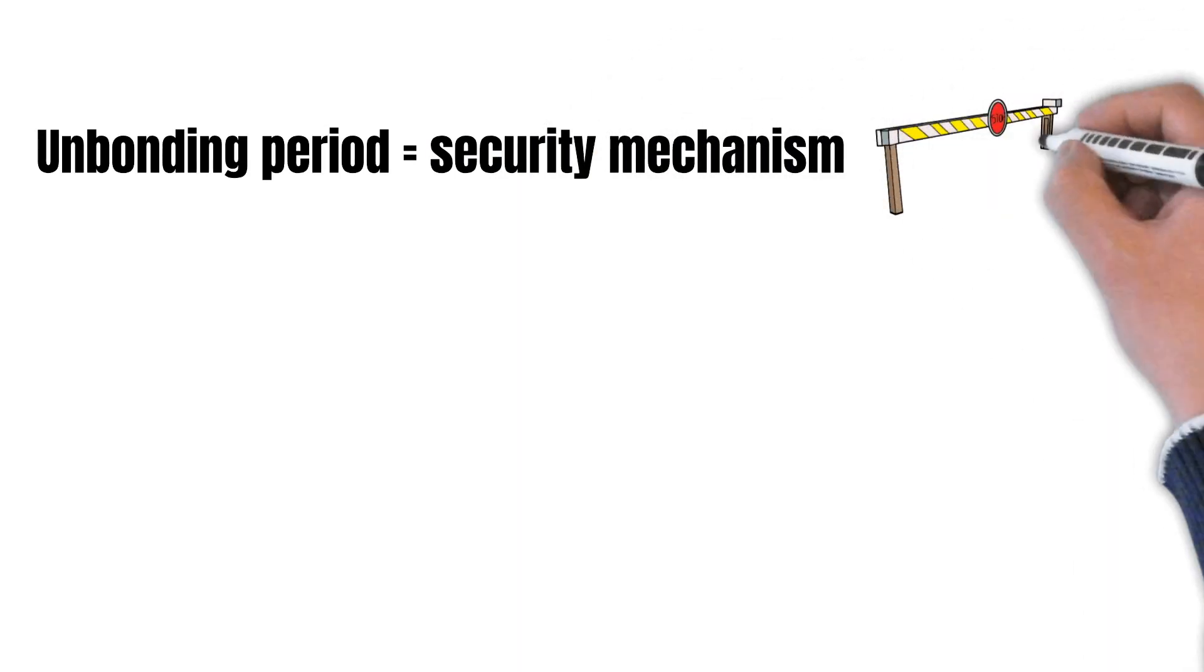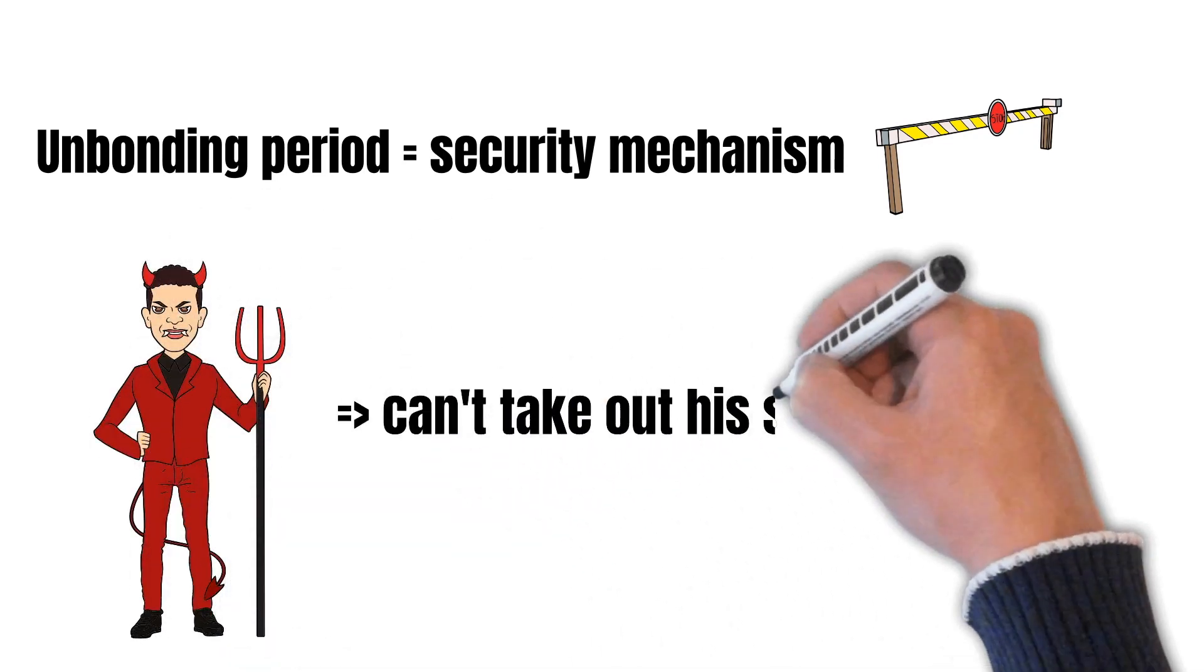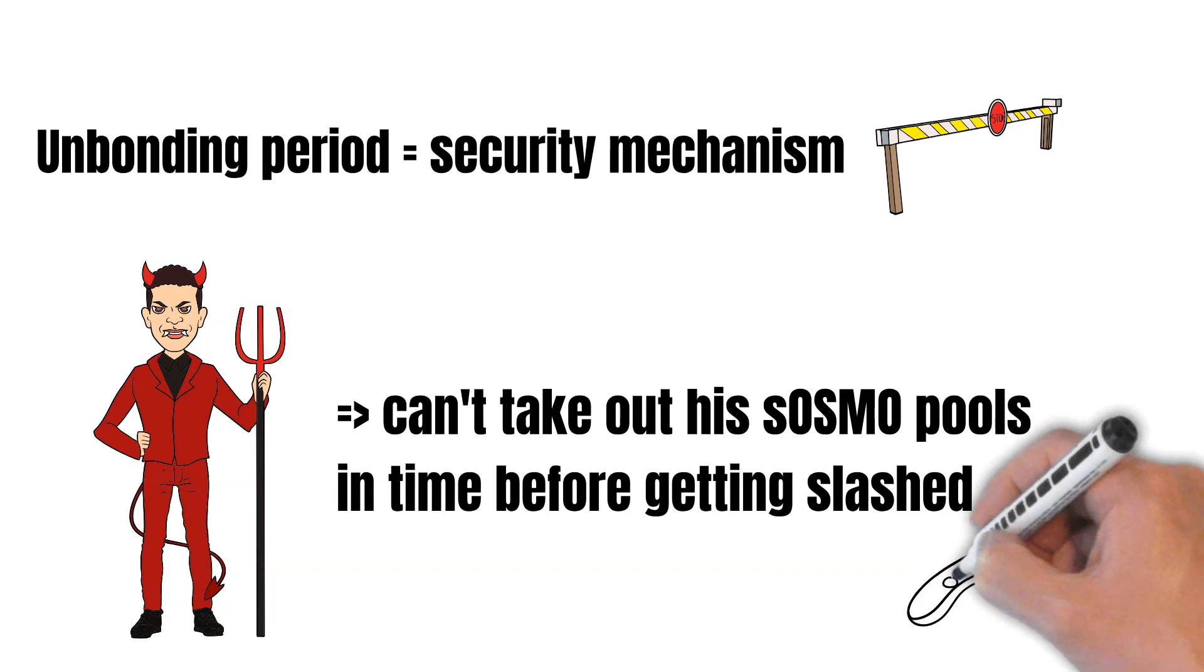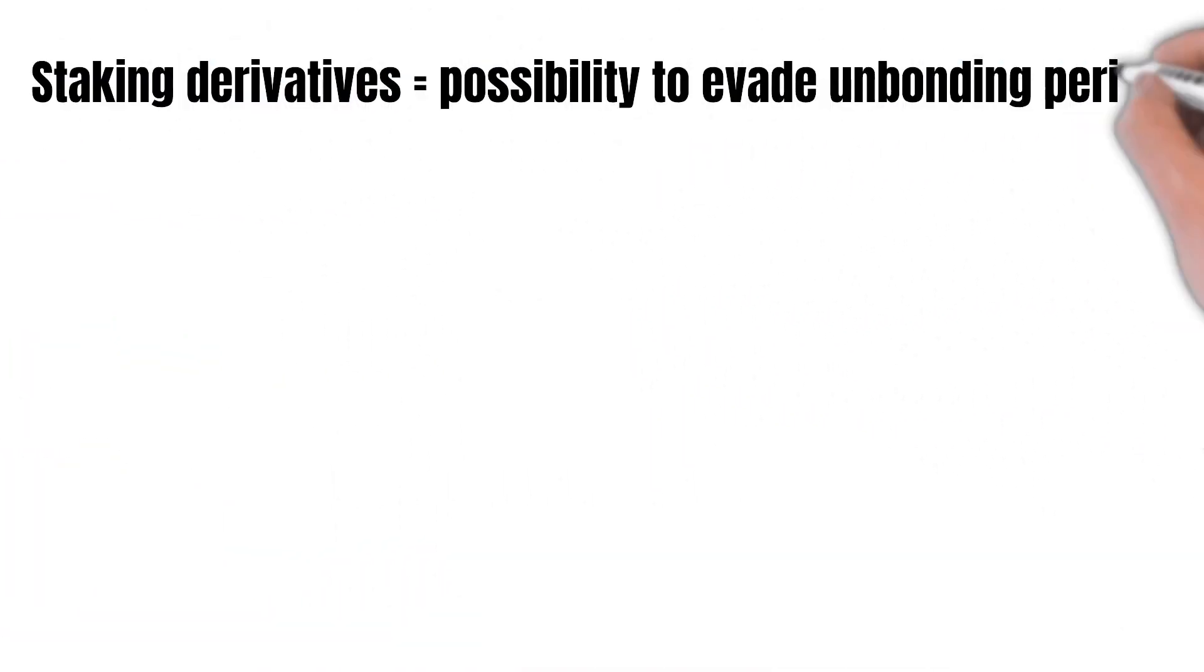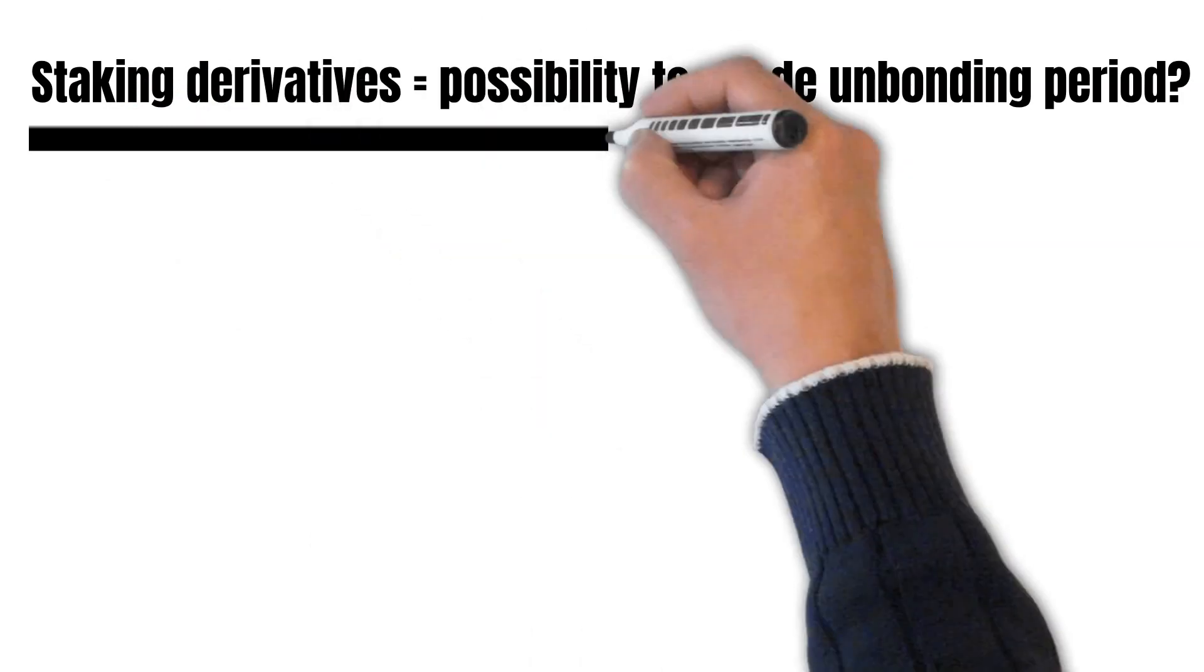The unbonding period is a security mechanism for precisely this matter. Within the 14 days unbonding period, the network would realize that the user acts maliciously and slash him. However, with a staking derivative, attackers could evade the unbonding period.